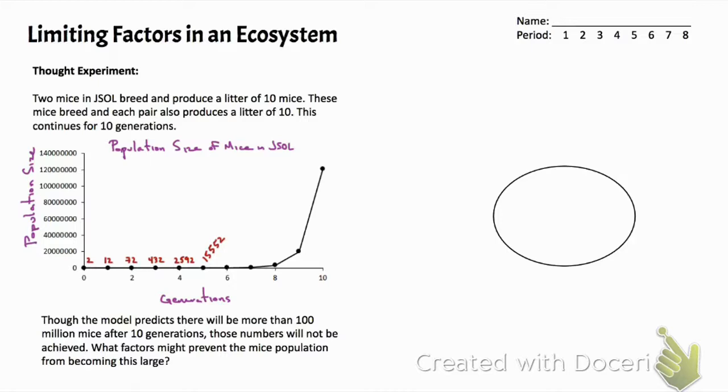This assumes no death, no immigration of new mice coming into the population, or emigration of mice leaving the population. You can see that this growth over five generations is merely just a blip when taken in context of our y-axis.